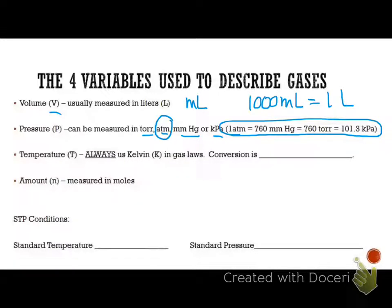One atmosphere is equal to 760 millimeters of mercury, which is equal to 760 torr, which is equal to 101.3 kilopascals. Notice that these are equal to each other. Basically, the millimeters of mercury is very common.